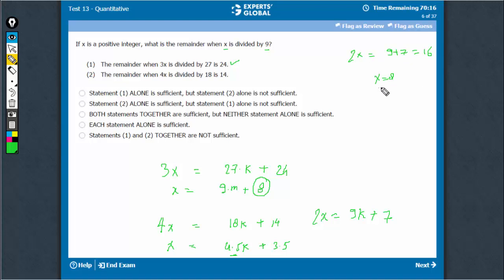x is equal to 8. x will leave remainder 8 with 9. So 8 is a possibility and 2x is equal to, let's say, 27 plus 7. That is another possibility.